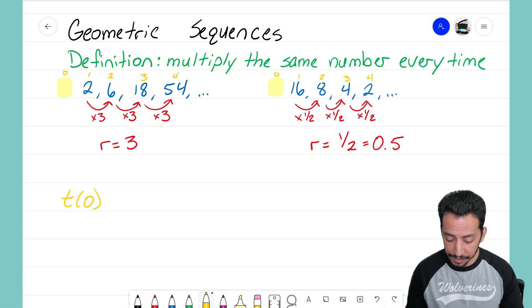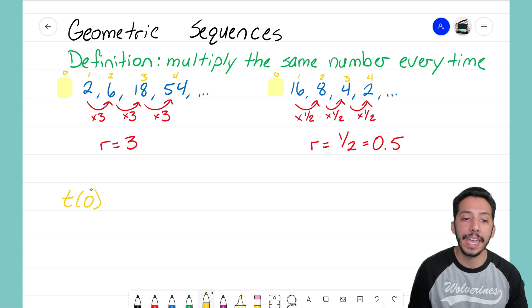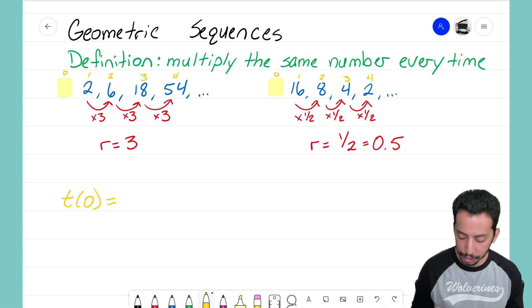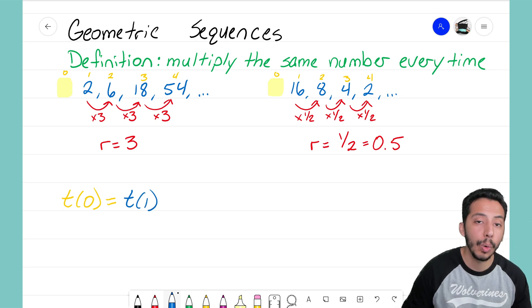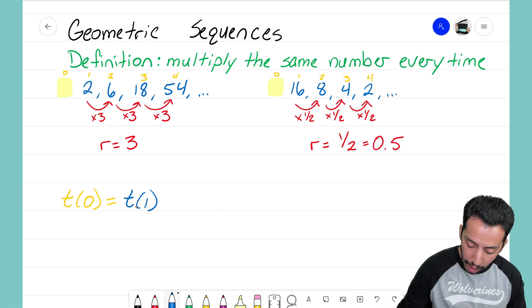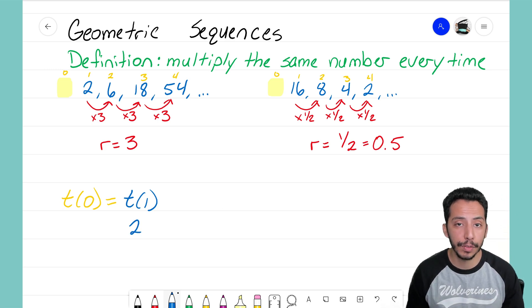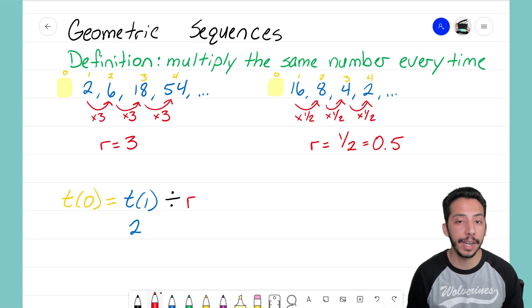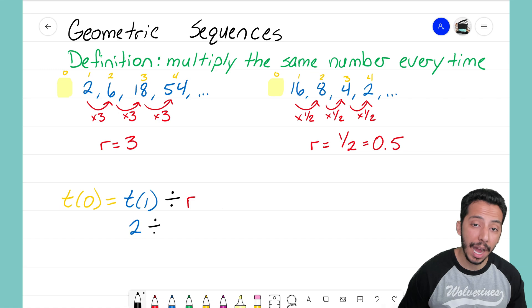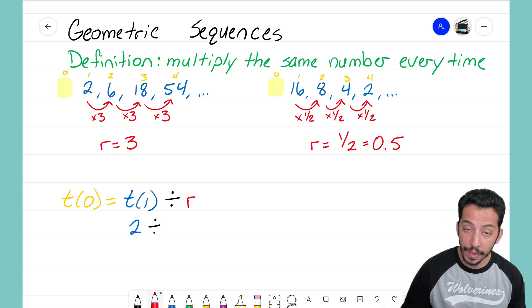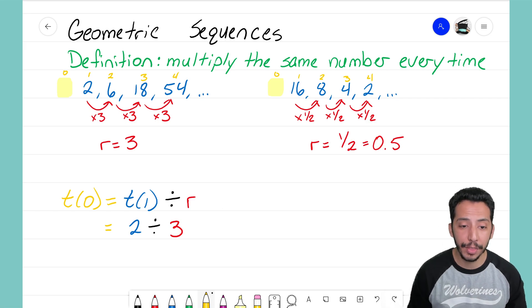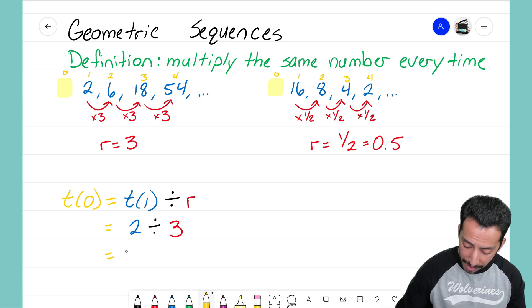Let's see how this plays out. I want to find the zero term. Remember, t(0) stands for what is the term in our zero position. So t(0) equals - we need to take our first term, which is t(1). We know that t(1) here is just 2, that is our first term. We need to take that and divide it by the common ratio.